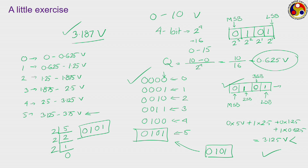Both the digital ramp converter and the successive approximation converter give the same value when resolution is the same. However, if one is 4-bit and the other is 3-bit, the outputs may differ. But if the number of bits and voltage ranges are the same, the corresponding binary output has to be exactly the same.